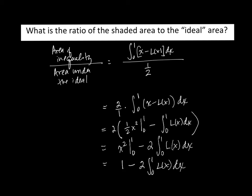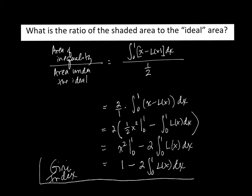This is called the Gini index, or Gini coefficient. We'll talk about properties of this number next, but that's your formula — that's what you're going to use.